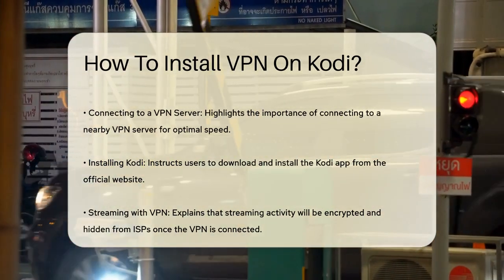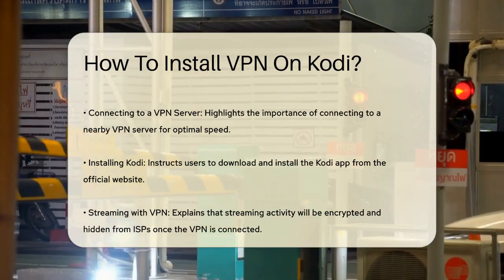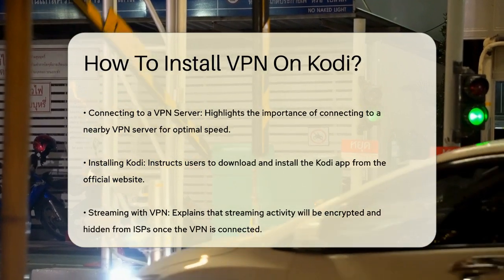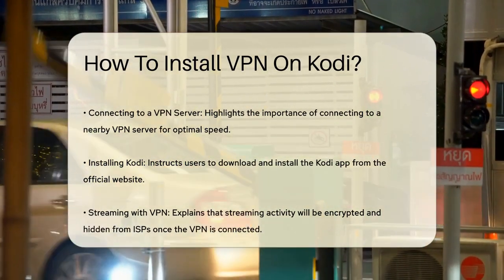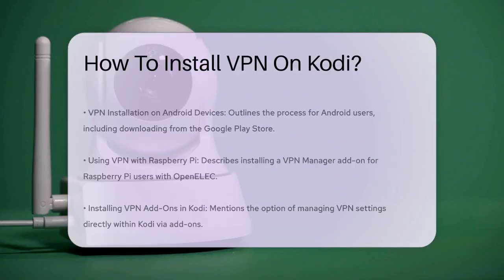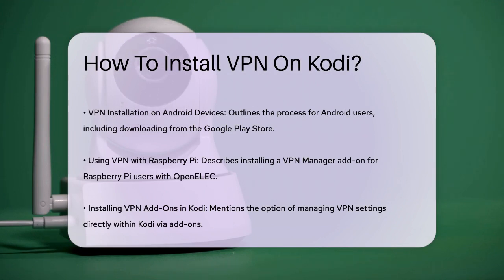On Raspberry Pi, you can use the VPN Manager add-on. First, ensure you have OpenALEC installed on your Raspberry Pi. Download the Zomboided repository zip file and copy it to the Raspberry Pi's downloads folder. In Kodi, go to System, then Settings, then Add-ons, and install from the zip file. Navigate to the Zomboided repository, select Services, and install the VPN Manager. Go back to the main screen, select Programs, choose VPN Manager, and follow the prompts to set up your VPN service.